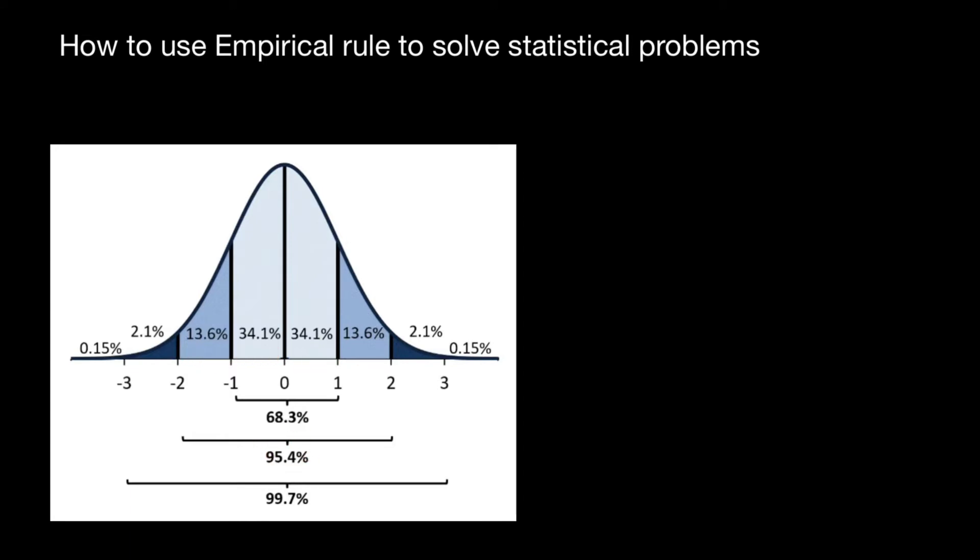And with three standard deviations of the mean, both left and right side, there are about 99.7% of the statistical data. Some might tell you 68.3 or 68 or 95% or 95.4, but this is just approximation.